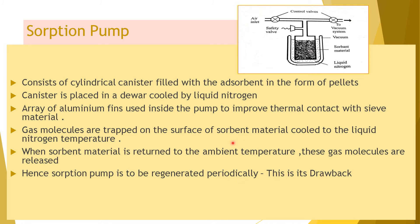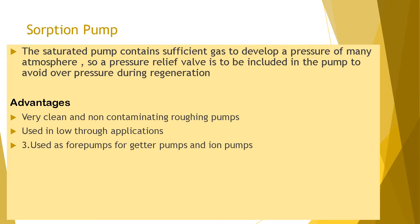When the sorbent material is returned to ambient temperature, these gas molecules are released, so the sorption pump must be regenerated periodically. This periodic regeneration is a significant drawback. When saturated, the pump contains sufficient gas to develop a pressure of many atmospheres, so a pressure relief valve must be included to avoid overpressure during regeneration.